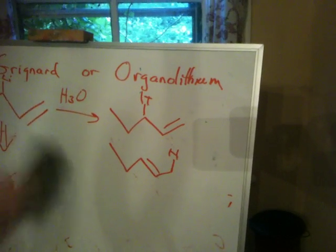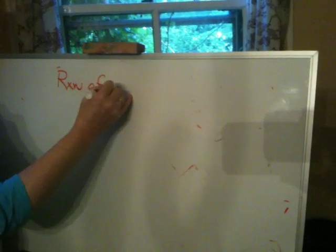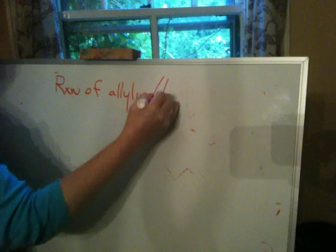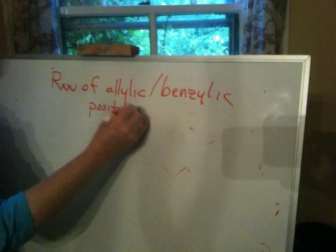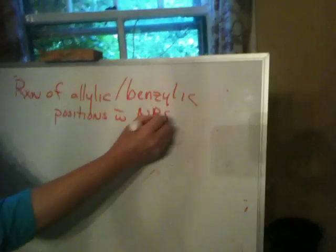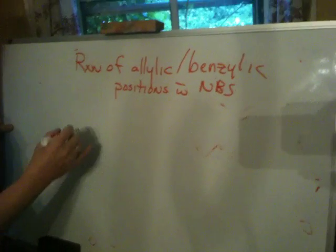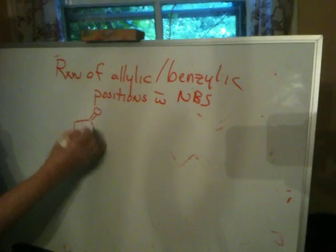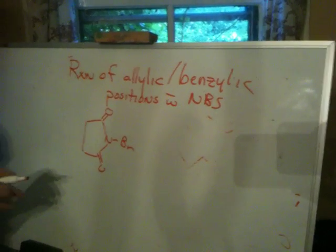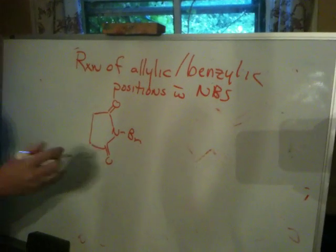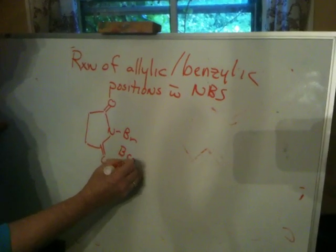Another reaction that I want you to focus on a little bit on your own, because we don't have a lot of time — I'm probably going to brush over it very quickly in class. NBS is the reaction of allylic and benzylic positions with NBS. NBS is N-bromosuccinimide, which has this structure. At this point I'm not going to write out a big mechanism for this, but suffice it to say that NBS is a bromine, a Br2 factory.